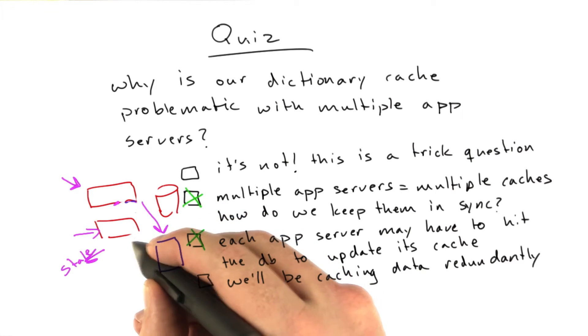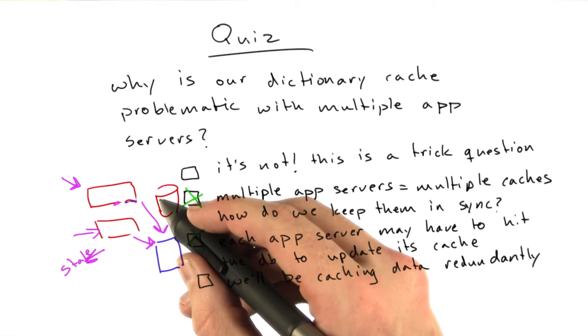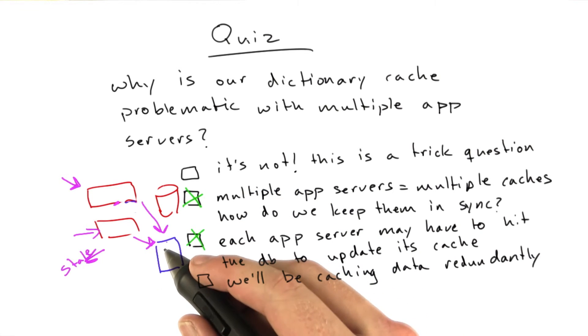And so now both these app servers will use a shared cache. This cache actually behaves very similar to the database, except the queries are much simpler. They're just key-value pairs, and it's probably only in memory.